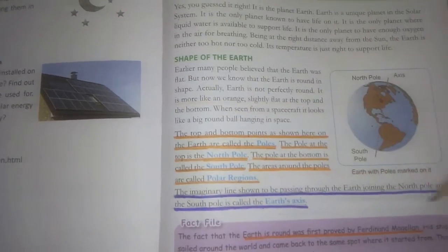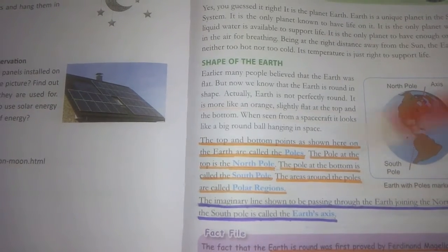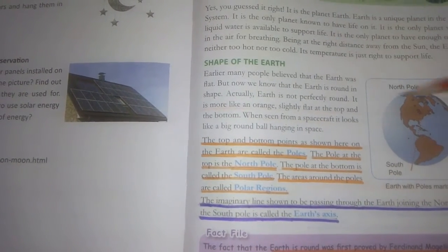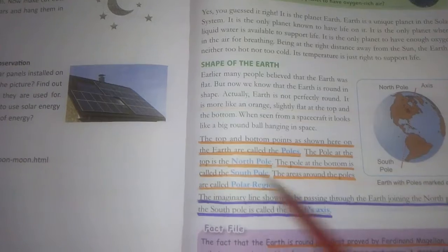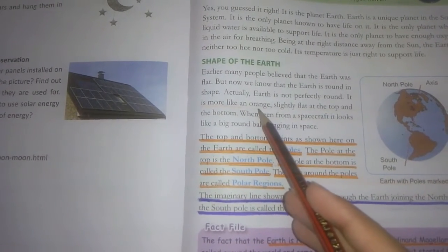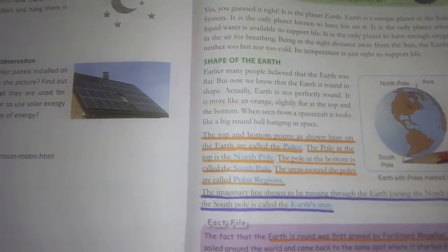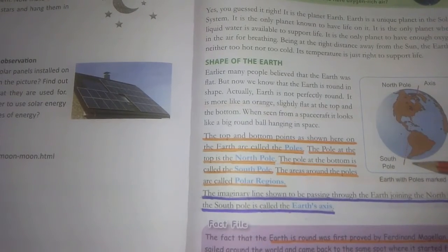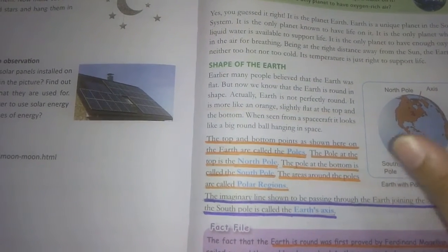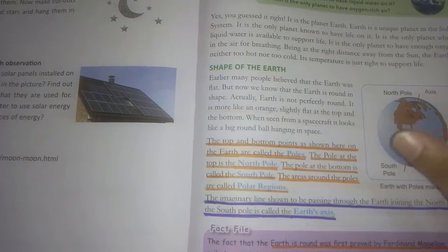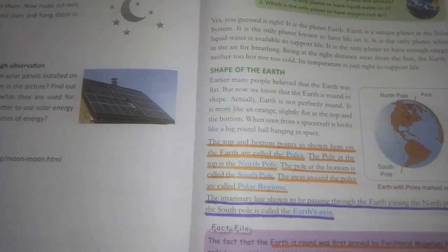Orange, you all have seen it. Orange is a fruit. So, it is like that the top and the bottom are flat. And when we see our planet in space, it is a big round ball hanging in space, like a ball hanging there. That's how our earth looks.